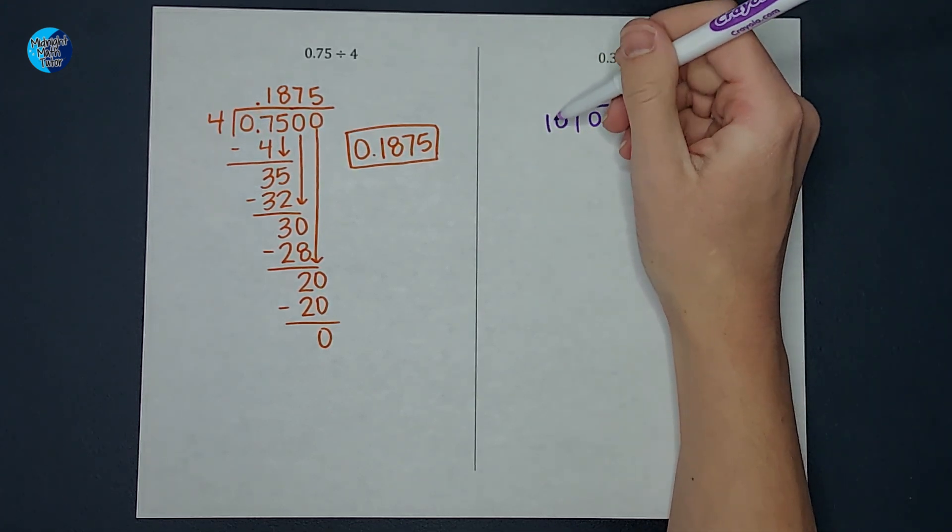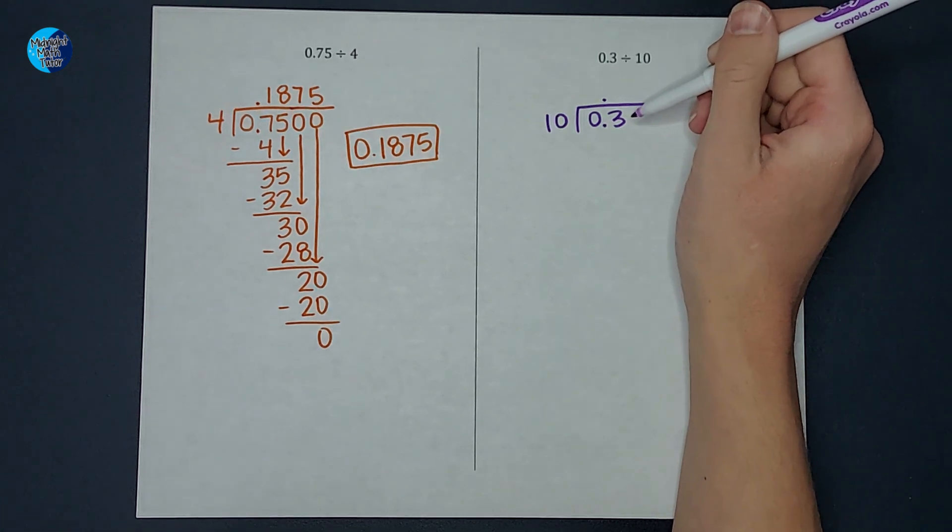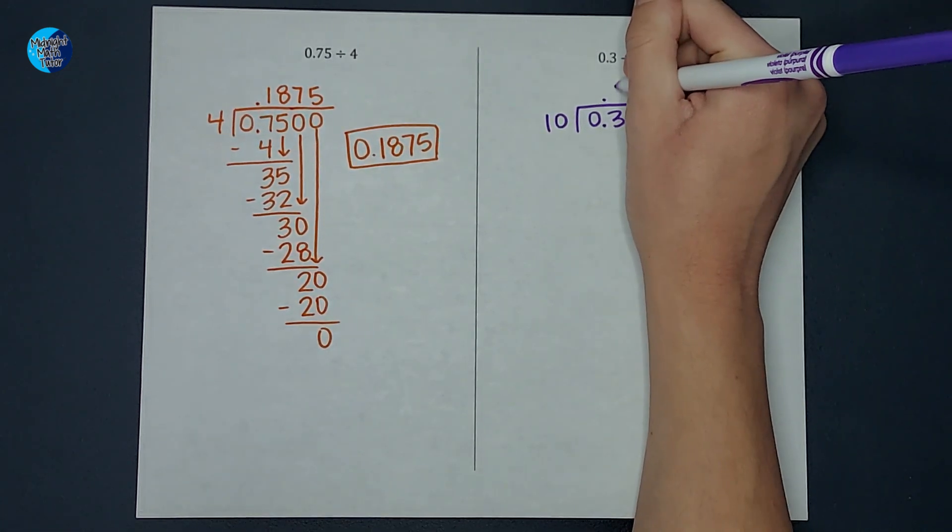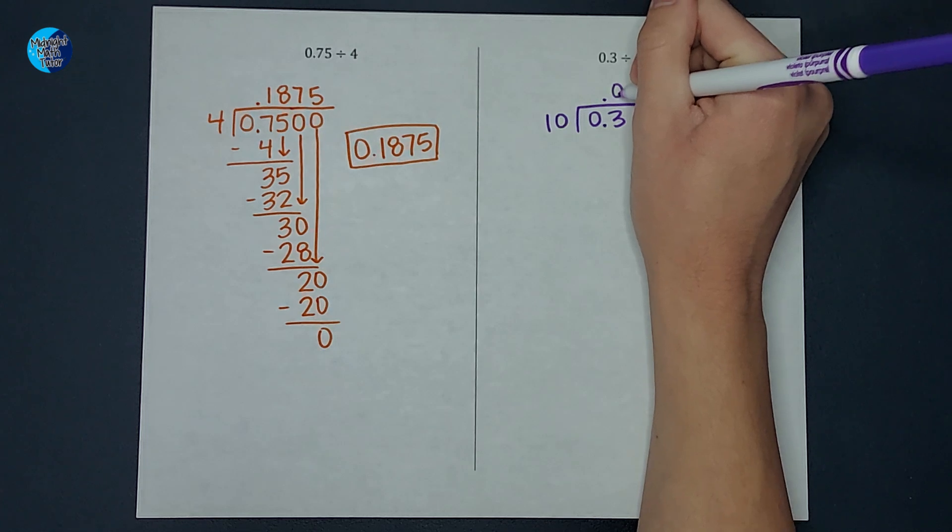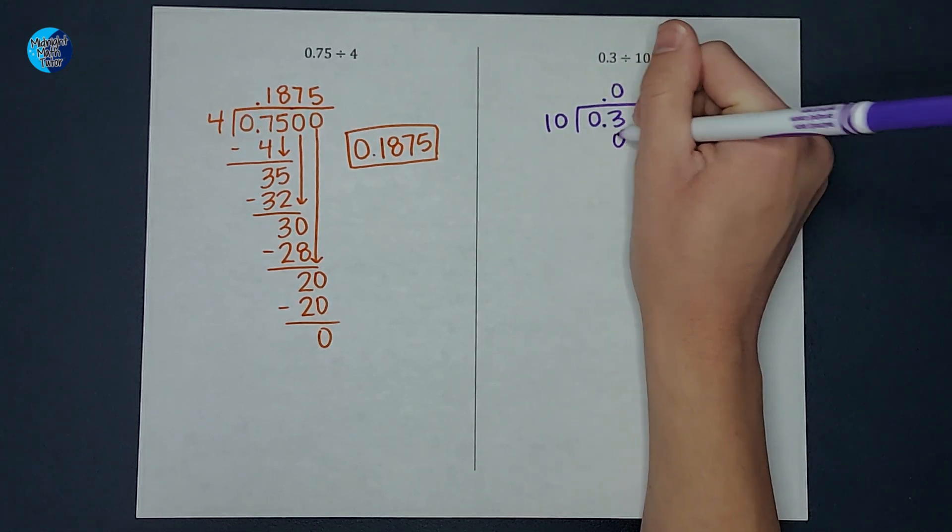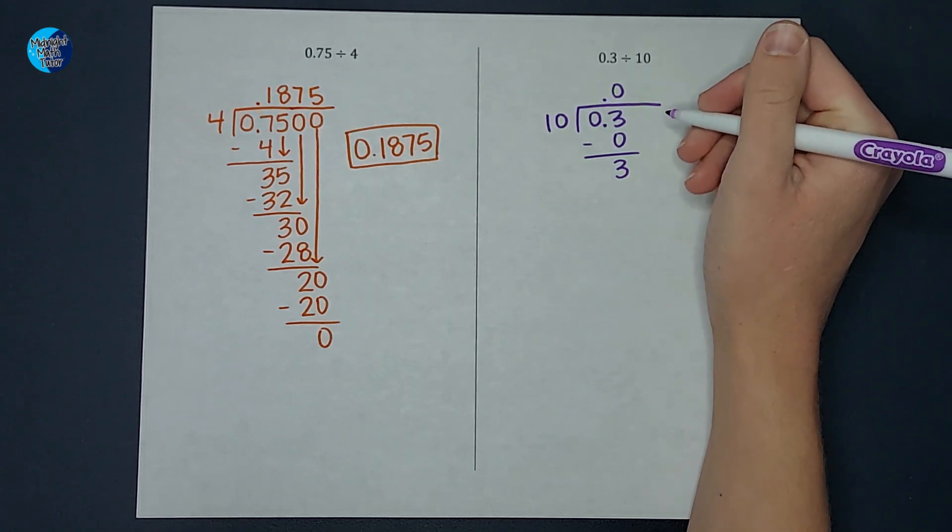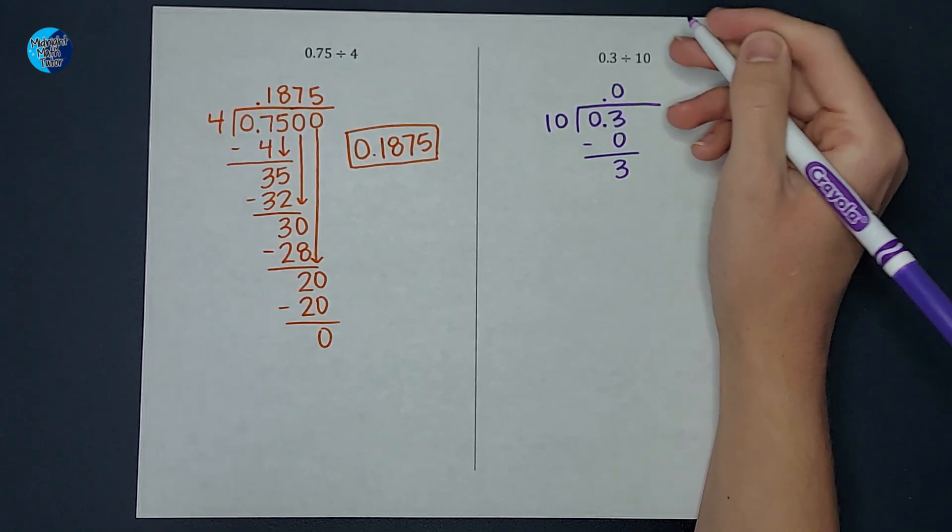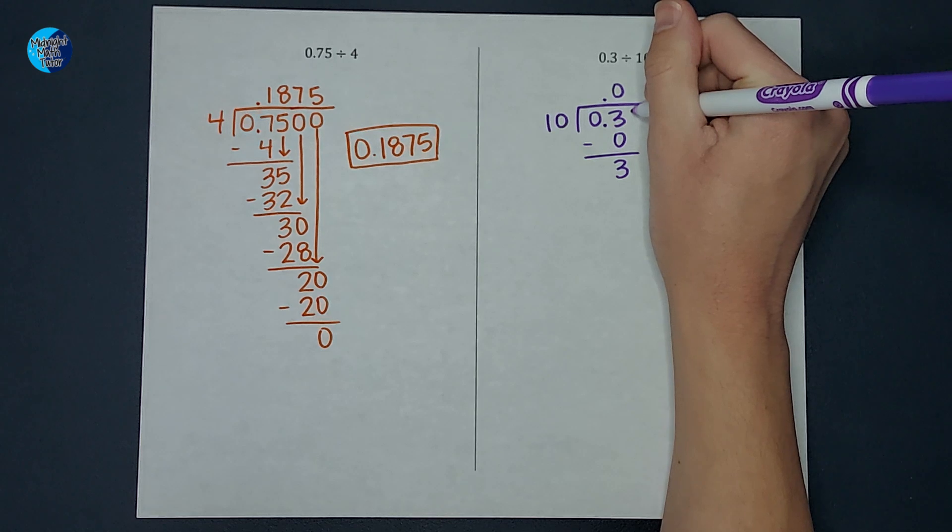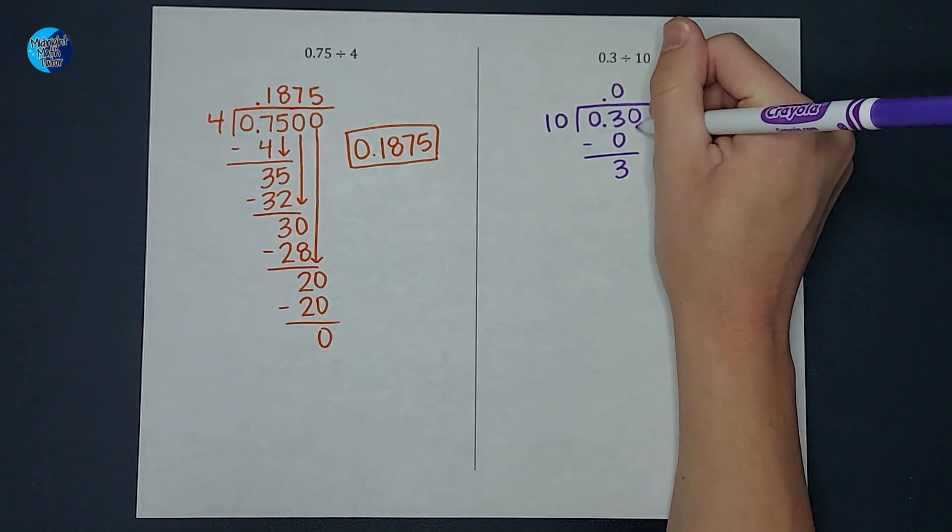So how many times does 10 go into 3? Well, it doesn't, right? So I can put a 0 here. 0 times 10 is 0. Subtract and I get 3. And then I don't want to do 0 remainder 3. That's lame. So I am going to add a 0 here and bring it down.